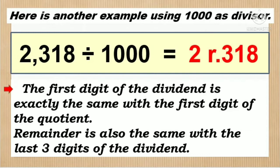Ngayon ay subukan natin gawing one thousand ang ating divisor. 2,318 divided by 1,000 is equal to 2 remainder 318. Napansin nyo ba? Tatlo ang zero ng ating divisor, kaya naman tatlo rin ang digit ng ating remainder. At syempre, ang first digit ng ating quotient ay katulad ng first digit ng ating dividend. Nakuha nyo ba ang trick, mga bata? Napakahusay!